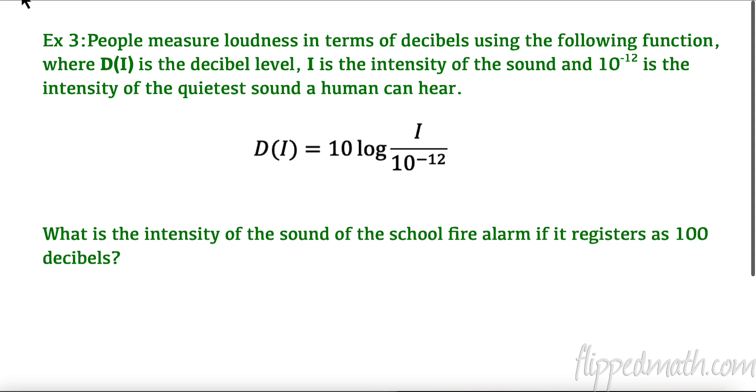Down here we have a situation where we are talking about decibels and the intensity of sounds. People measure loudness in terms of decibels using the following function where d(i) is the decibel level, i is the intensity of the sound, and this right here 10 to the negative 12, that is the quietest sound a human can hear. Very quiet. So this is the formula which says what is the intensity of the sound of a school fire alarm if it registers as 100 decibels? So d(i) is going to be 100, and it's going to equal 10 log of i, the intensity of this sound, over 10 to the negative 12 which is the quietest sound we can hear. To solve this I'm going to divide by 10, so 100 divided by 10 is 10.